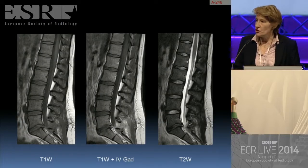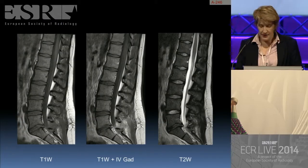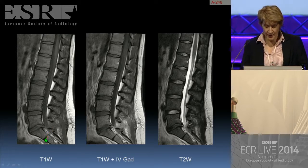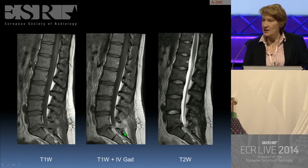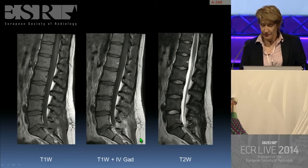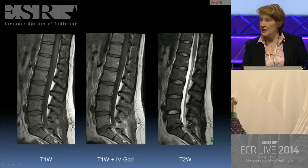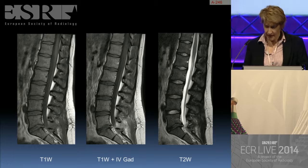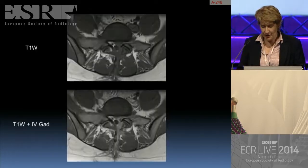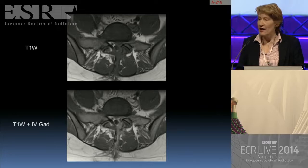Just going to show you two slides. Here you can see we have the sagittal T1-weighted image, a T1-weighted post-intravenous gadolinium, and the sagittal T2-weighted image. Just remember that the previous surgery was performed at the L5-S1 level on the left side.